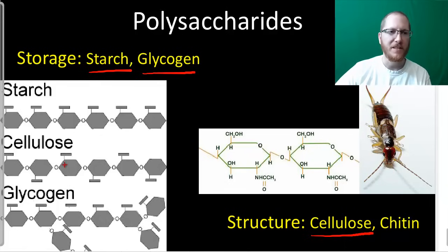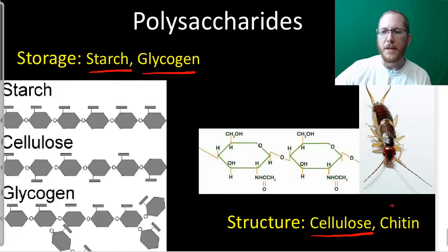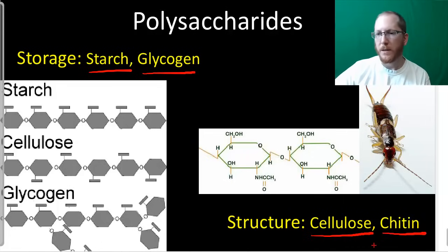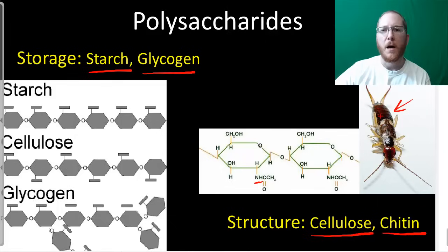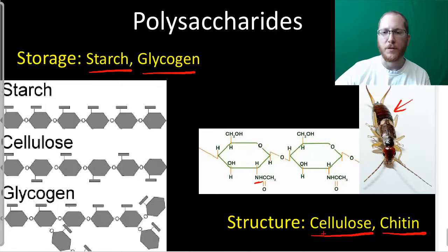Cellulose is used structurally by plants — it's very similar to starch, just the way it bonds is slightly different; it flips the way the monosaccharide faces. There is also chitin, used in insect exoskeletons and certain fungi. Chitin is a string of nitrogenous sugars — sugars with a nitrogen attached. That crunchy part of an insect or crustacean is made of chitin, a durable molecule used for structure. Don't think all carbs are just sugars you eat — they can be durable structural molecules too.